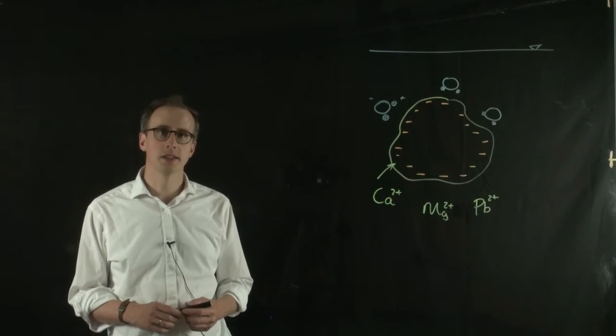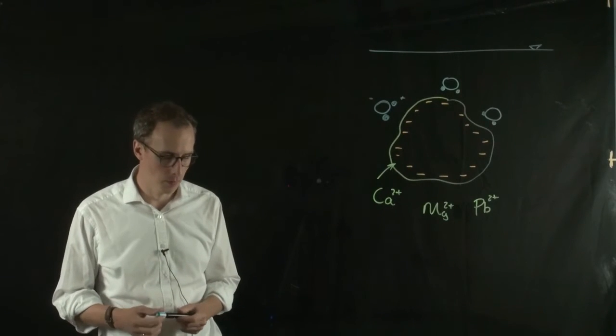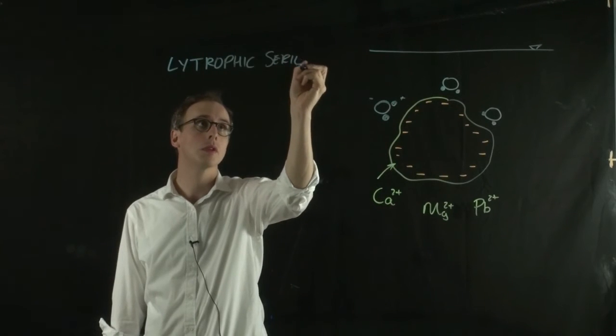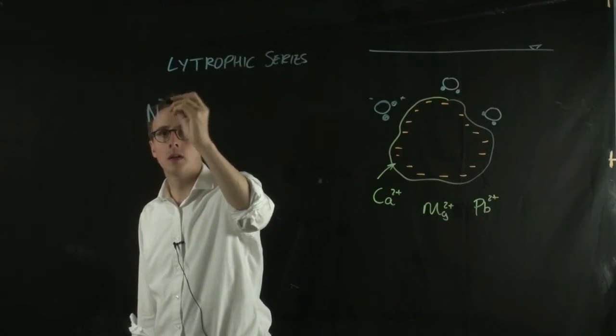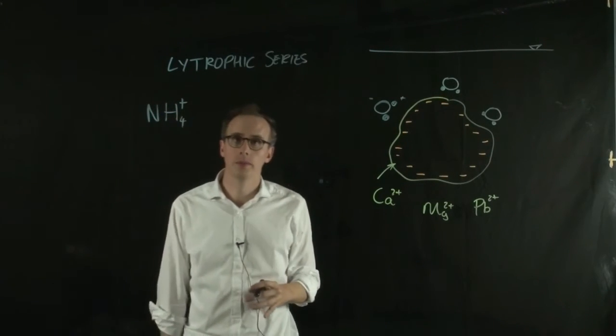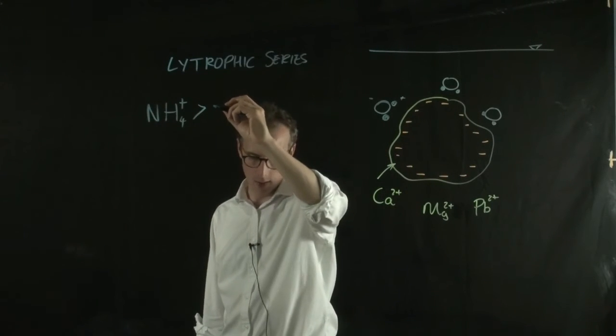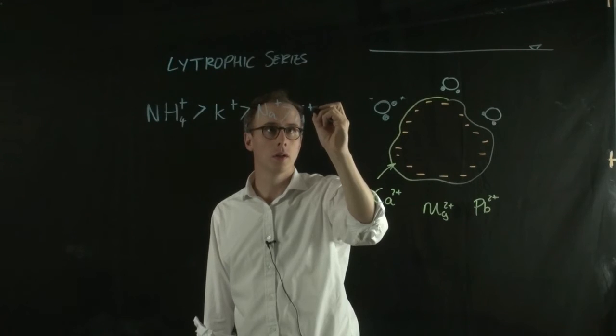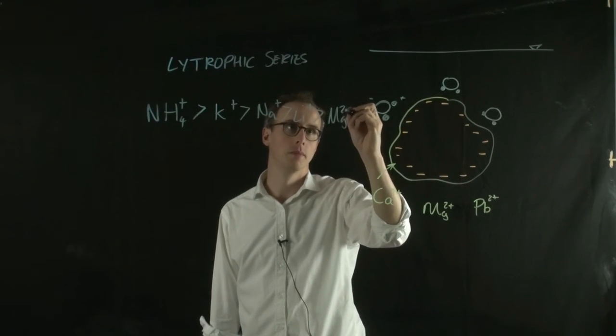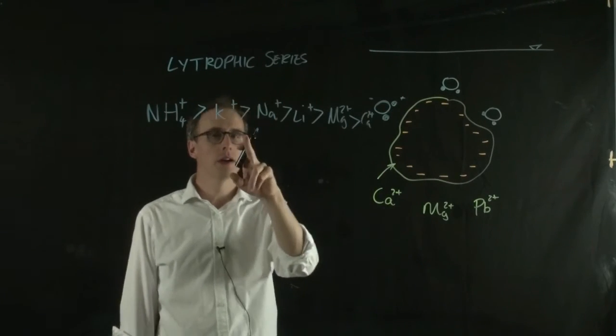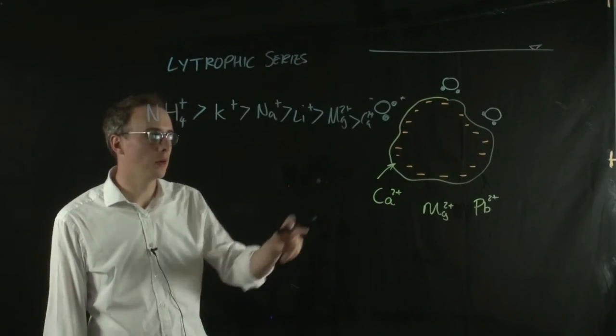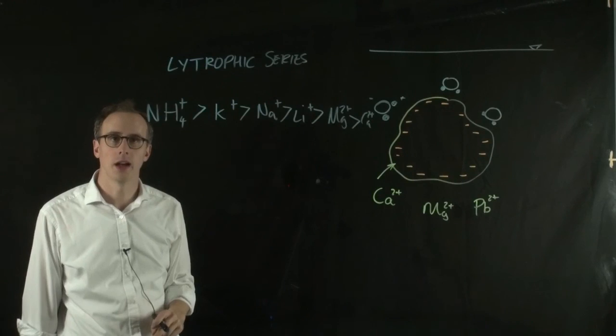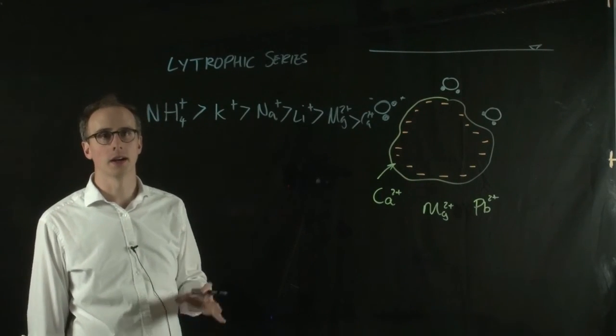We also know that different cations absorb differently onto the surface of the clays, and it gives rise to something called the lyotropic series. We know that ammonium ions absorb better than potassium, which is better than sodium, which is better than lithium, which is better than magnesium and calcium. So if you have cations lower in the scale already absorbed to your clay particle, you might find that it swaps with some of the cations or the ions higher in the scale. That's another interesting feature within cation exchange within clay minerals.